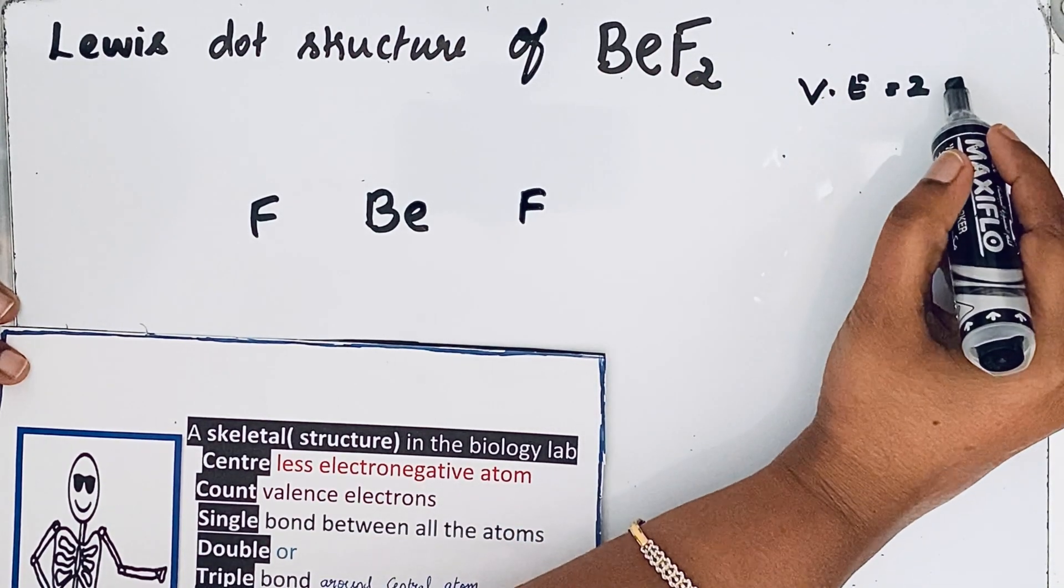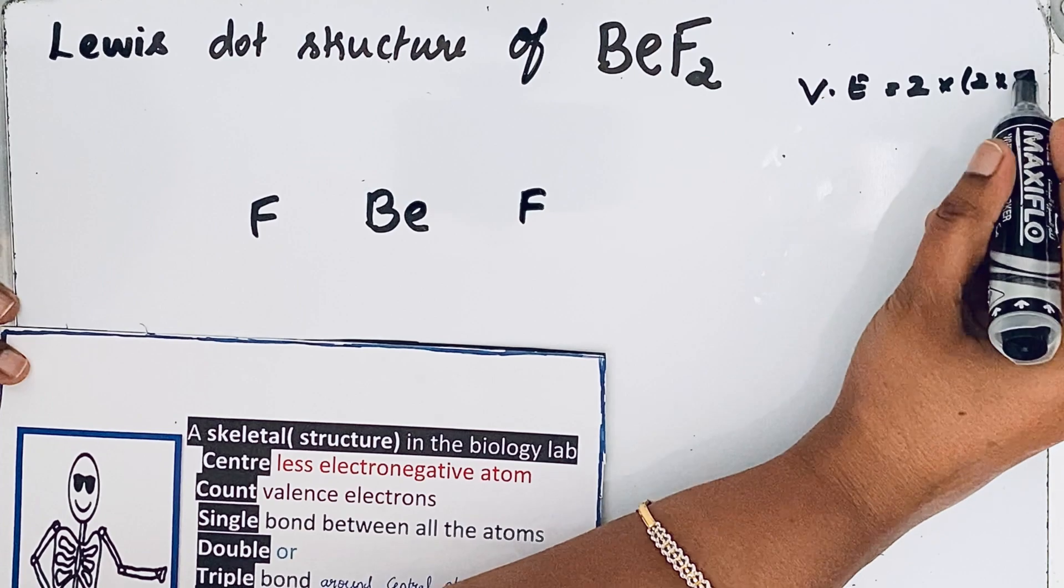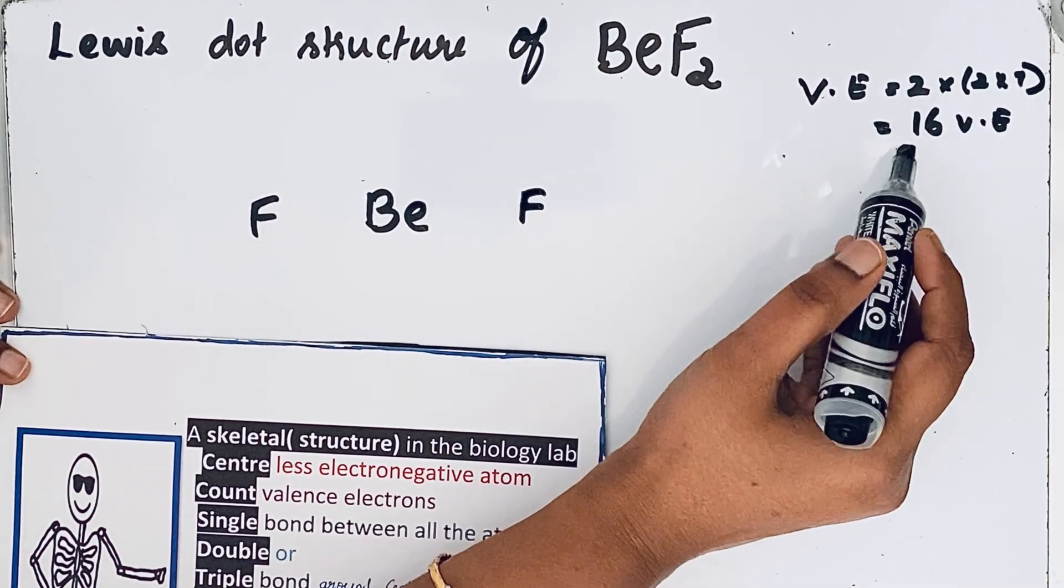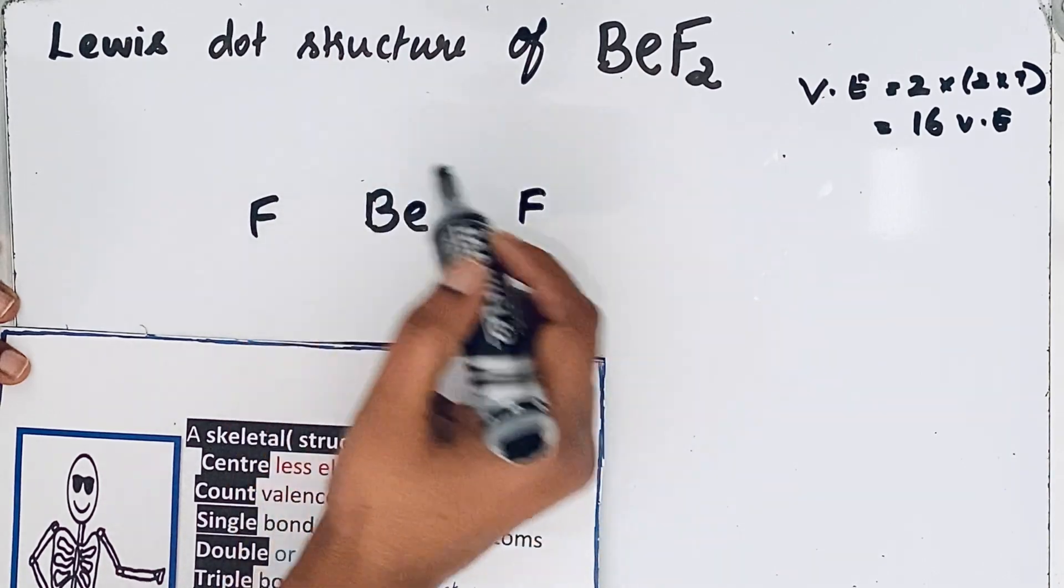So 2 plus 14 in valence electrons we should show in this Lewis dot structure.